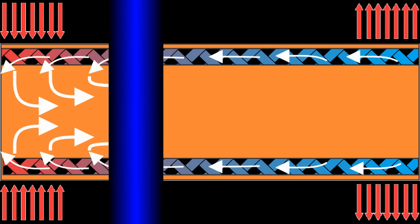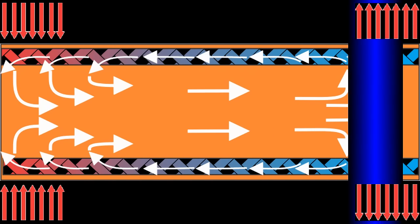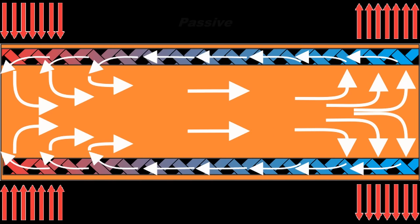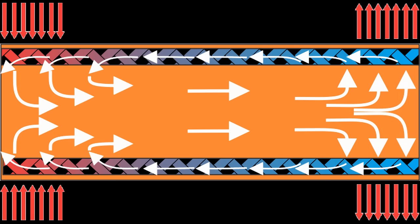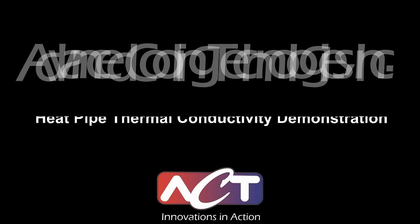By utilizing liquid and vapor phases, the heat transport is extremely efficient. Because it's a closed loop system, heat pipes operate continuously and passively, creating a very reliable component in your thermal management system.